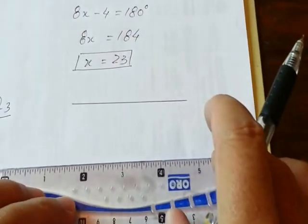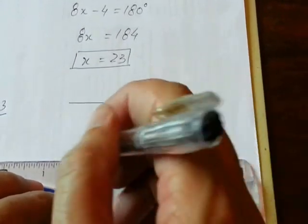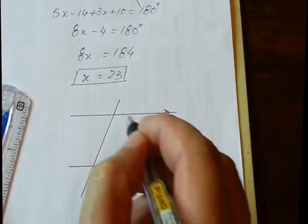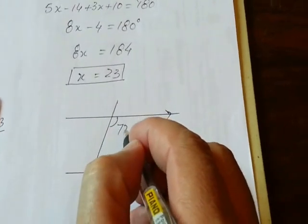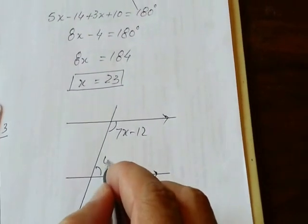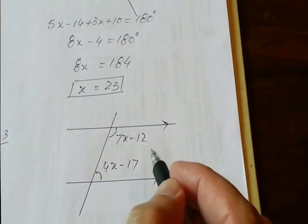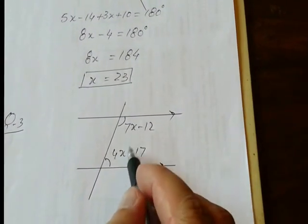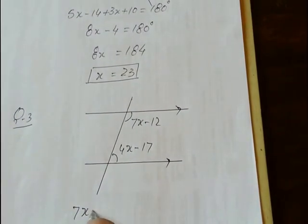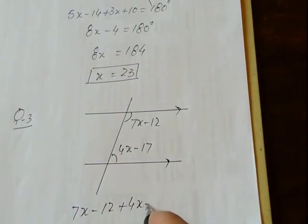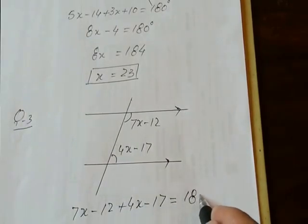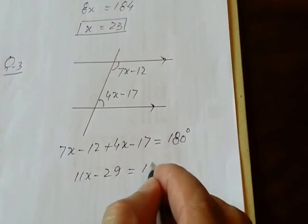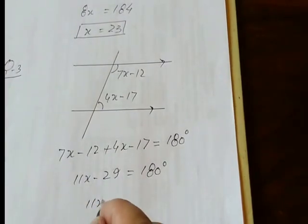Question 3: Two parallel lines are given. The angle at one point is 7x minus 12 and the angle at the other point is 4x minus 17. Using the property that the sum of interior angles equals 180 degrees: (7x − 12) + (4x − 17) = 180, so 11x − 29 = 180.